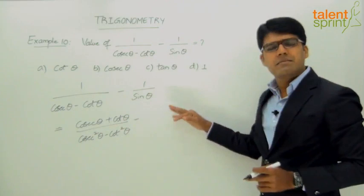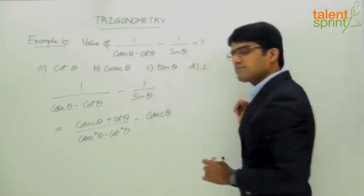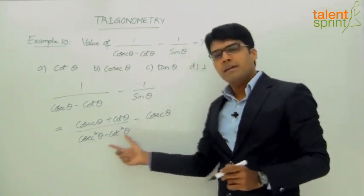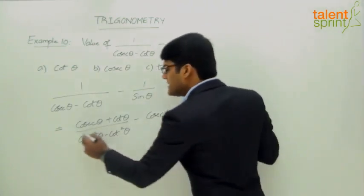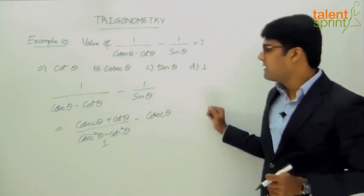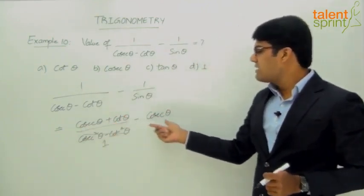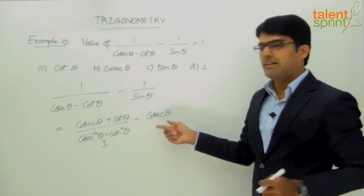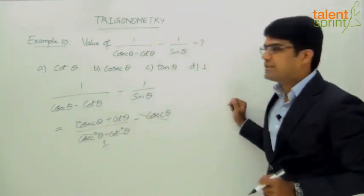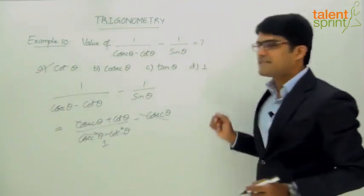Now, 1 by sine theta can simply be taken as cosecant theta. The denominator cosecant squared theta minus cot squared theta equals 1, so the denominator is eliminated. What remains is cosecant theta plus cot theta minus cosecant theta. The two cosecant theta terms cancel, and the final answer is cot theta, which is option A.